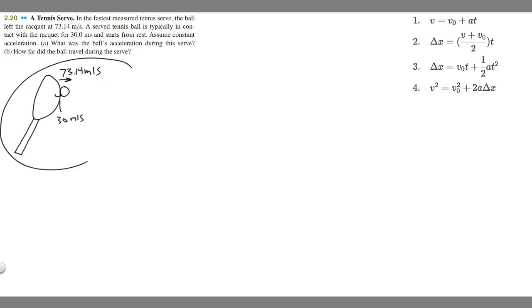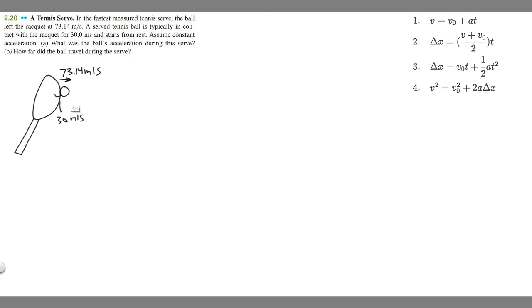I tried to draw an image of what's going on here. We have this racket hitting this ball, and when it leaves the racket it's traveling at 73.14 meters per second. We know that it's in contact for 30 milliseconds. Before we solve the problem, I always like to write down what's given.